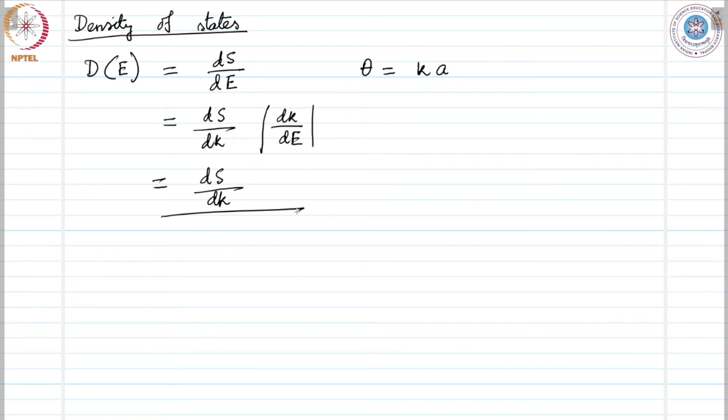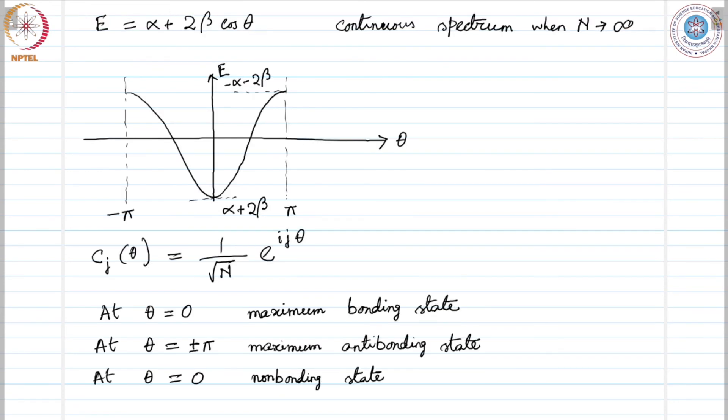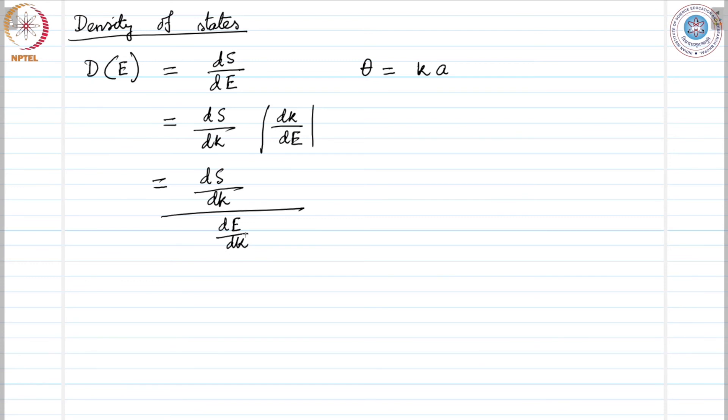We can calculate for a cosine function this quantity very easily, and we can write that this quantity would be equal to (2na)/(2π) × 1/(2βa sin ka), which simplifies to n/π × 1/√(4β² - (E-α)²).